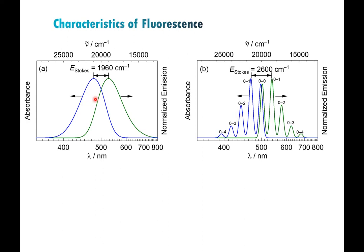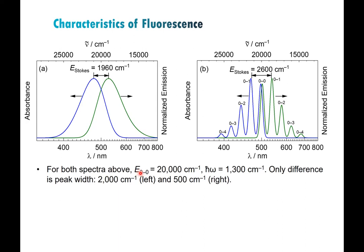These two simulated spectra have the same E(0-0) values and the same vibronic spacing — the only difference is peak broadening. In solution, broadening occurs primarily due to different interactions with the solvent; since electronic transitions are vertical and occur very quickly, the solvent doesn't rearrange on that timescale, so different solvent arrangements cause the lines to broaden and energy levels to smear out. At really low temperatures, you get much sharper peaks and can resolve the vibronic structure much better.